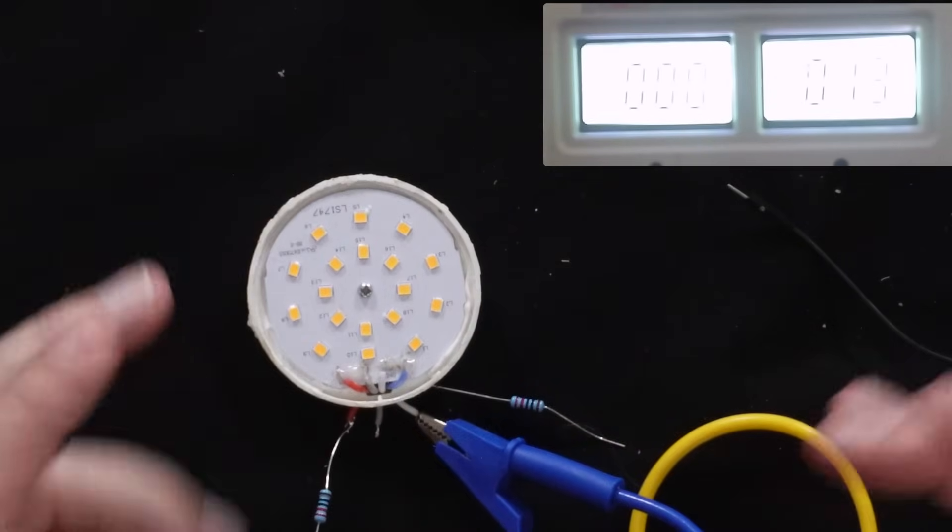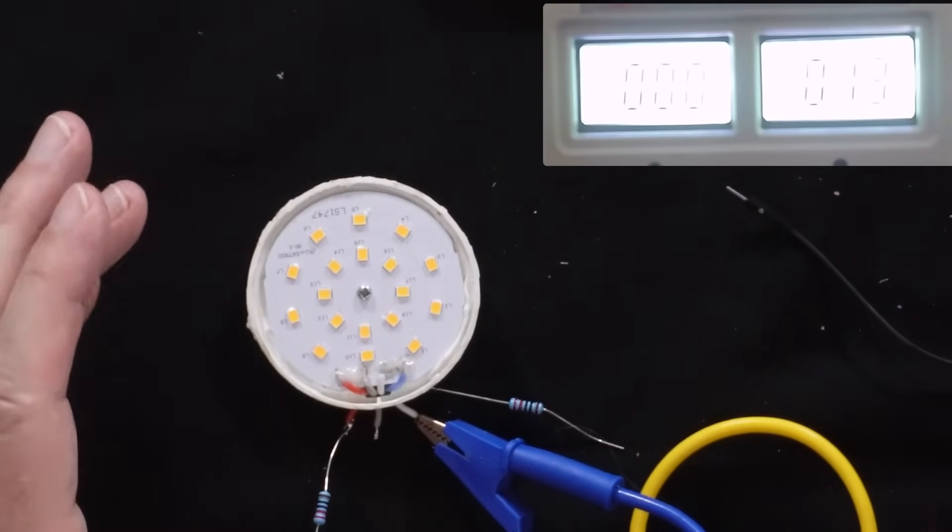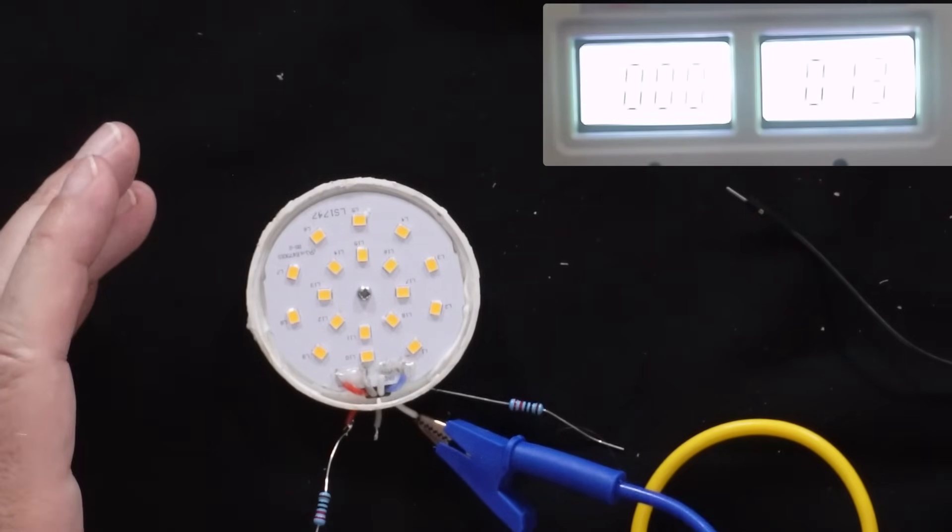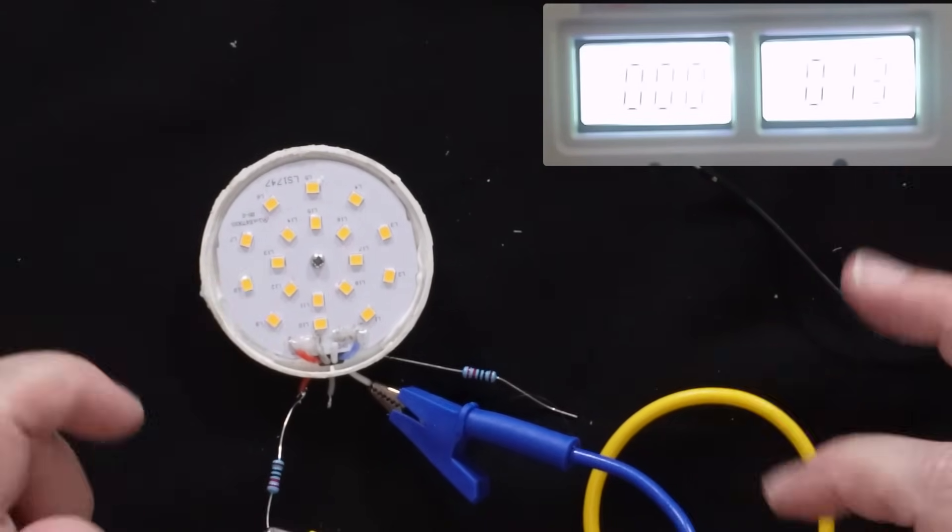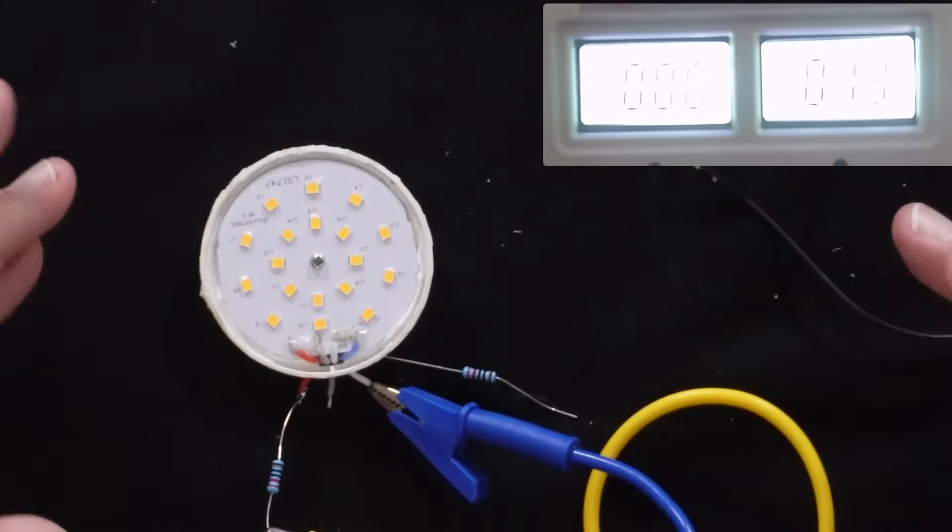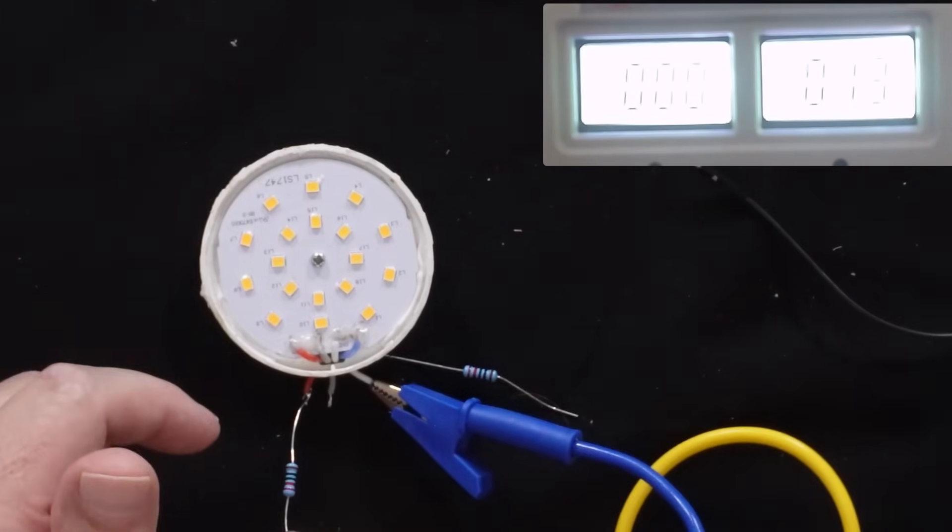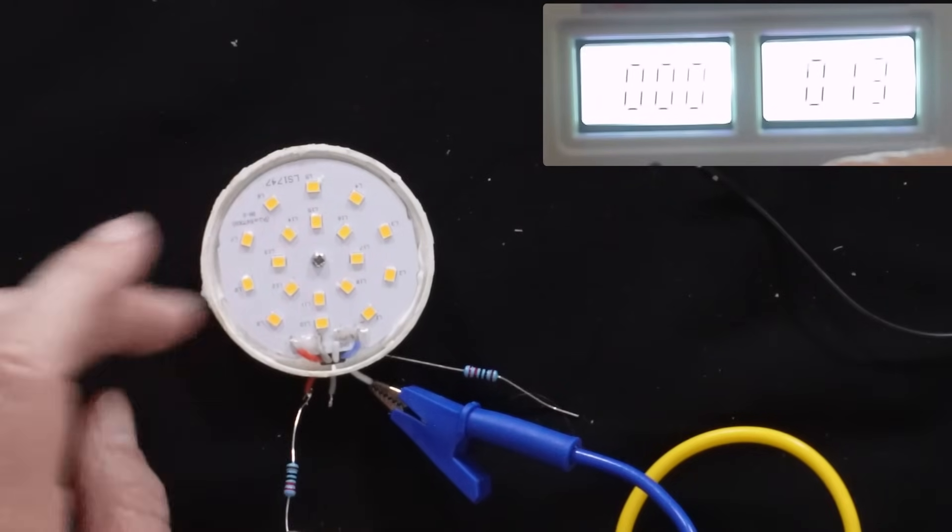So these LEDs are designed to have one set that work when it's in the emergency mode and another set that work when it's in the regular powered mode. The emergency ones are the ones on the inside. As you can see, there are two rings. All right. So I've already connected up to that inner ring.